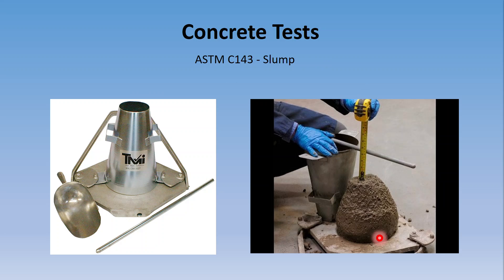Slump is probably the most common and well-known test. You have a slump cone, a consolidation rod, and a method for measuring the results. In the pictures, they're using a base plate with little wings to hold the cone down, but it's more common to just stand on the two foot pads. There's been a few shorter people who prefer to use the locking wings when taking the test.